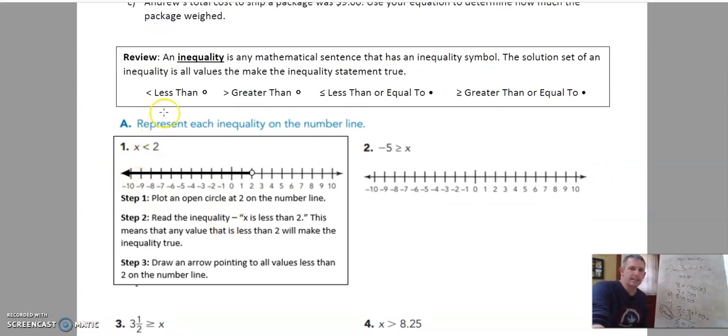It says x is less than two. All right so what we need to do is indicate all the values that x could be and make the statement true. It's going to be anything that is less than two. So they put a circle on the two. Okay and we use a circle because this cannot be two and be a true statement. So we use a circle. So plot an open circle at two on the number line and then the inequality x is less than two.